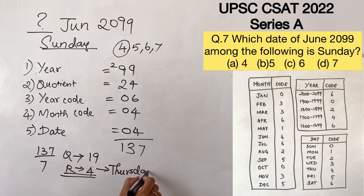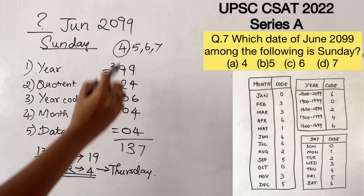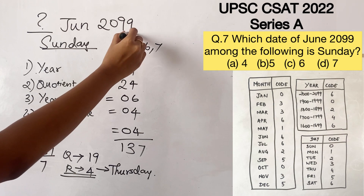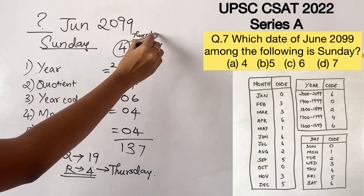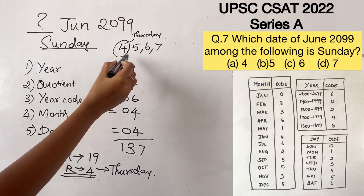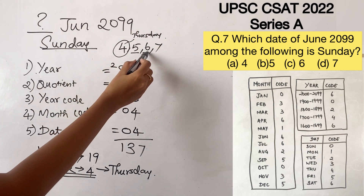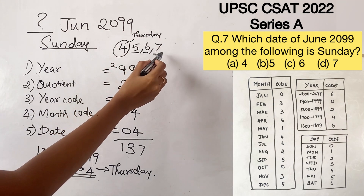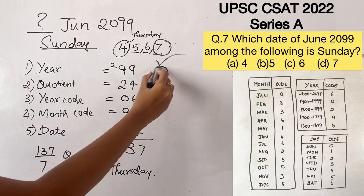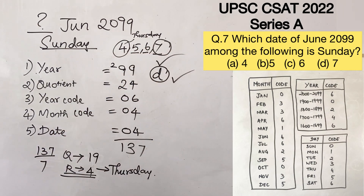We took 4 for consideration, and we now know that 4th June 2099 is a Thursday. Therefore, 5th will be Friday, 6th will be Saturday, and 7th will be a Sunday. So option D is the correct answer.